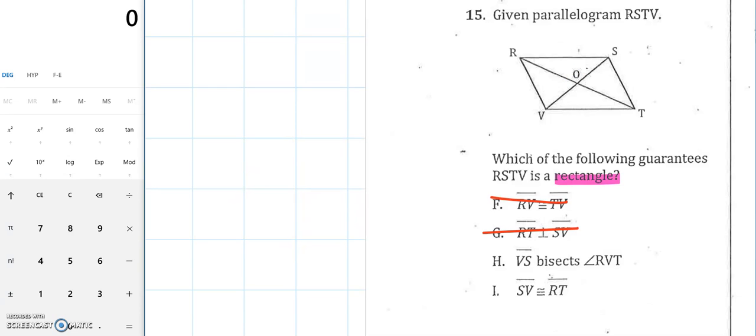Next, VS, which is a diagonal, bisects angle RVT. The fact that this angle was bisected, again, this is a property of a rhombus. All three of these so far have been rhombus properties, which you definitely need to study and need to know. But this is not what's going to prove that it is a rectangle. Let's hope the last one works.